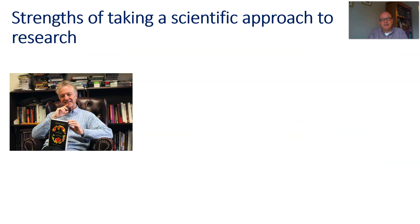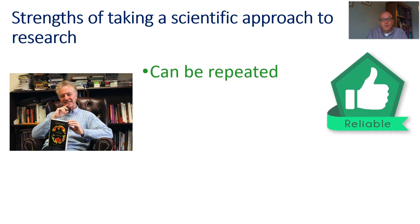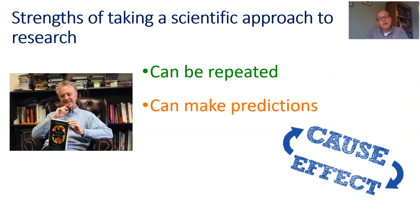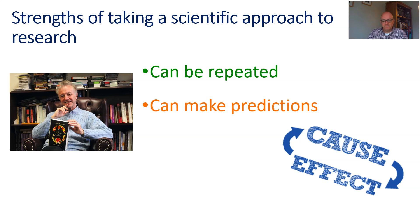So, Adrian Raine and the scientific approach to research — why do it? What's good about it? Well, first of all, if it's well controlled and well structured, you can repeat the study. If you repeat the study and get the same findings, it's reliable. The idea that if something consistently happens, that must be something real — we can trust it. Also, if we're controlling variables, we can establish cause and effect. If we can establish cause and effect, we can make predictions. If we establish that the frontal cortex is linked to aggressive behaviour, then people who have a less active frontal cortex we can predict may be susceptible to being aggressive. Whereas if we haven't established cause and effect, can we trust those predictions?